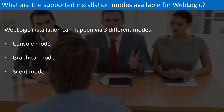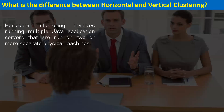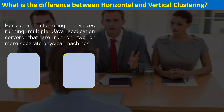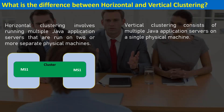What is the difference between horizontal and vertical clustering? Clustering provides high availability and load balancing with multiple managed servers. Horizontal clustering involves running multiple Java application servers on two or more separate physical machines. For example, with two physical machines, you can have a cluster of two managed servers — MS1 on machine one and MS2 on machine two — spanning across multiple physical servers.